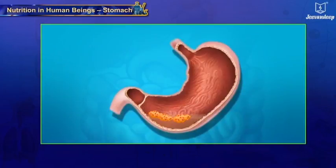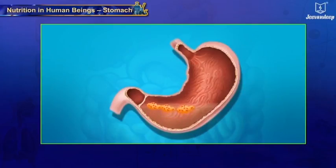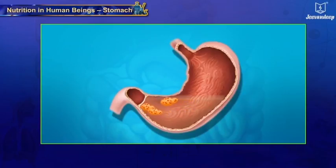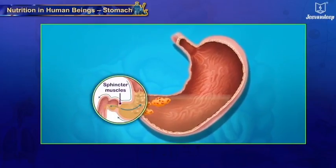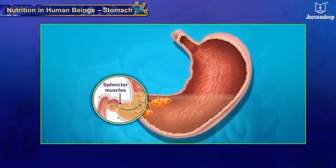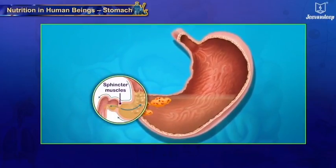The muscular walls of the stomach churn the food and help in proper mixing with gastric juices. Sphincter muscles at the junction of the stomach and small intestine regulate the release of small amounts of partly digested food into the small intestine.